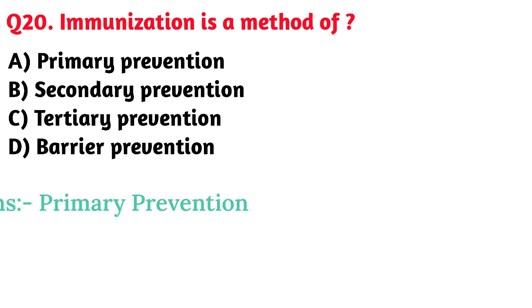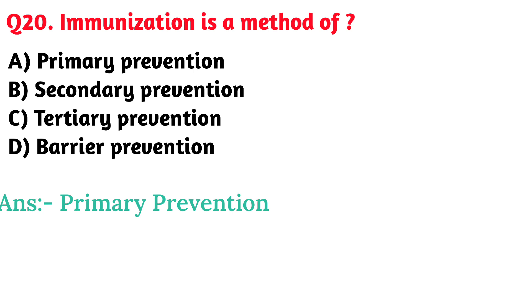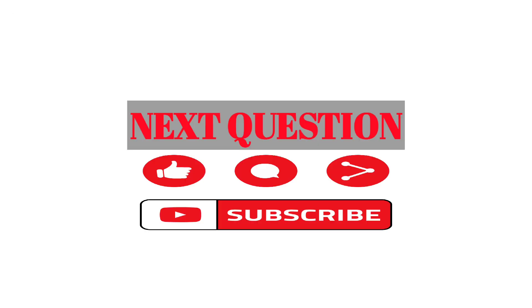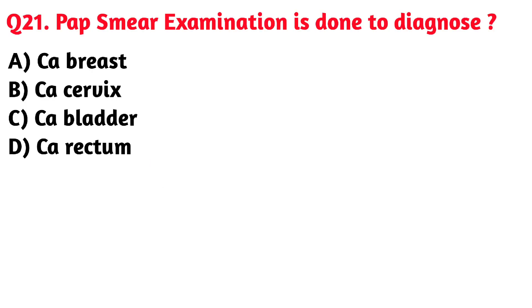Next question: Immunization is a method of. Option A. Primary prevention is the correct answer.